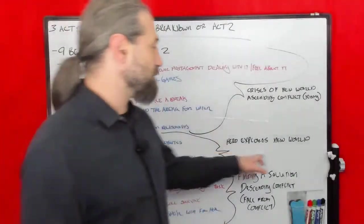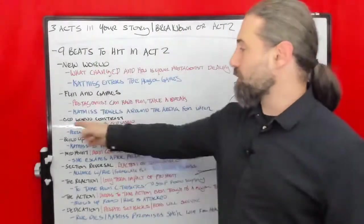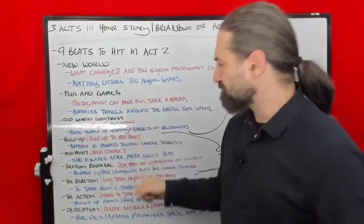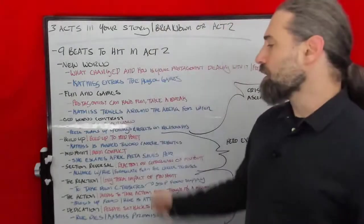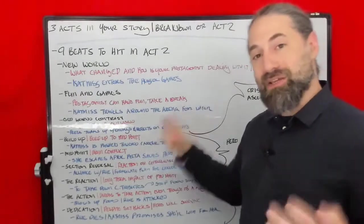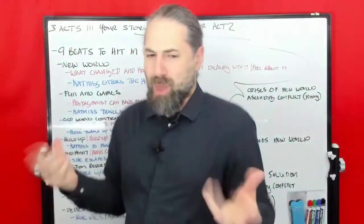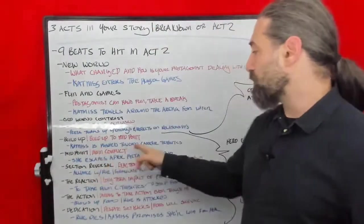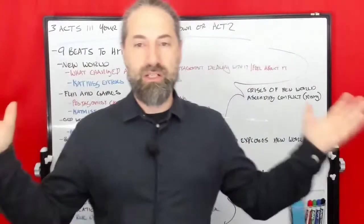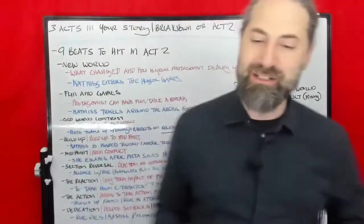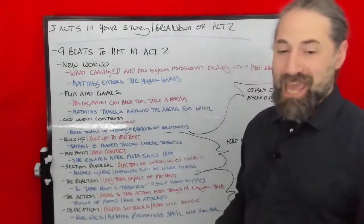The second section is Hero Explores New World — also known as the midpoint. We're leading to the main conflict, and it has three beats: build-up, midpoint, and reversal. The build-up is the build-up to the midpoint — things start really boiling up but haven't overflowed yet. For Katniss, she is pushed towards career tributes. The arena starts applying pressure — there's a storm, and she has to run. She's being pushed towards the career tributes, who are basically the antagonists.